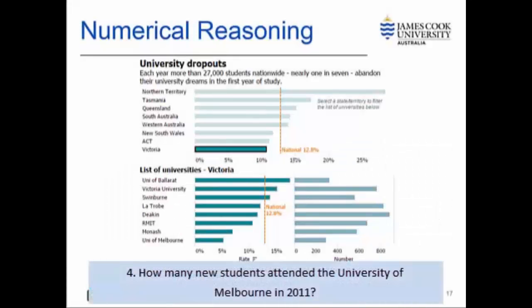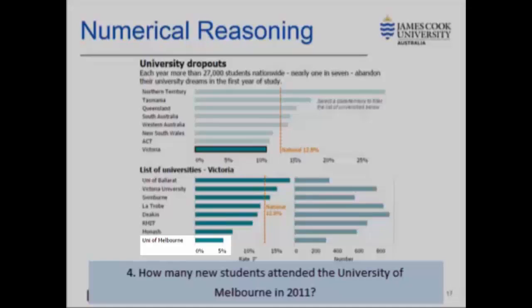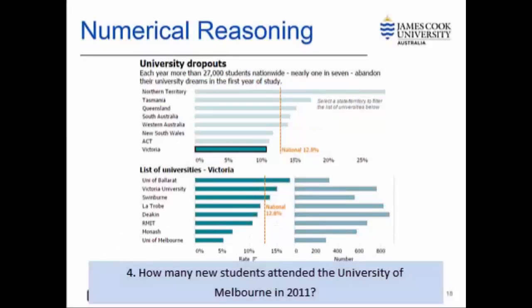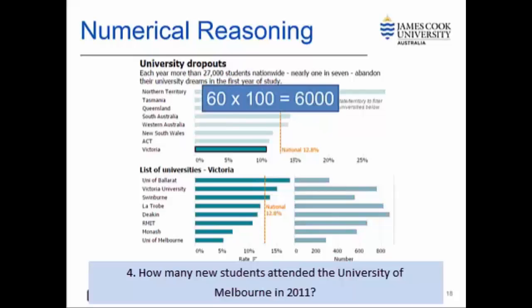The fourth question may provide a higher level of difficulty to some students at first glance. The question asks how many new students attended the University of Melbourne in 2011. This information is not explicitly marked in the graph. However, we can work it out: around 5% of first year students at the University of Melbourne is equal to around 300 students. By dividing 300 by 5, we calculate that 1% equals 60 students, and therefore 100% equals 6,000. So there were approximately 6,000 new students who attended the University of Melbourne in 2011.